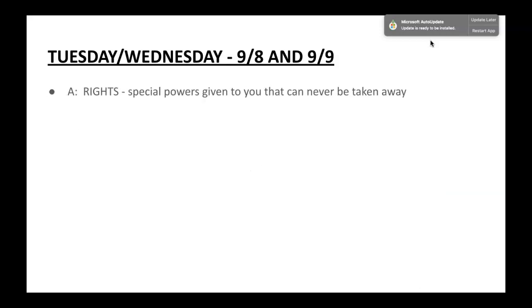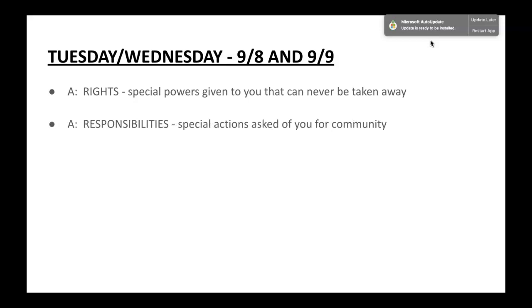Let's define what rights are. Rights are special powers given to you that can never be taken away. Our rights come from the United States Constitution and are often deemed to be unalienable. Responsibilities, on the other hand, are special actions asked of you for the well-being of your community. From a civic standpoint, it's acting in a way that benefits everybody and being mindful of everyone.